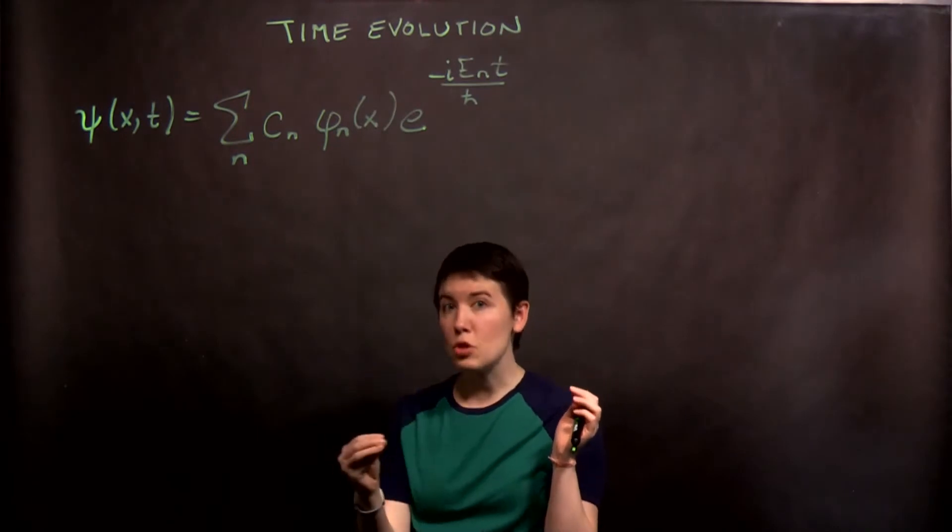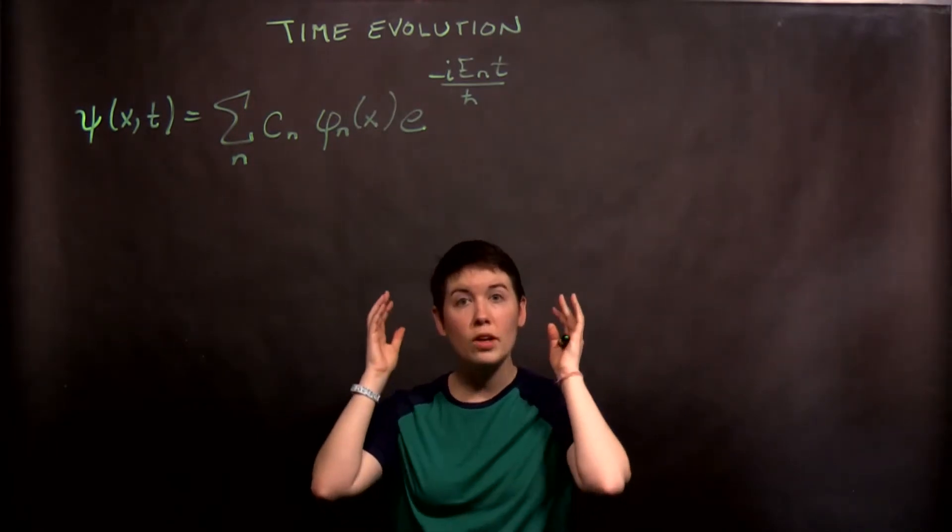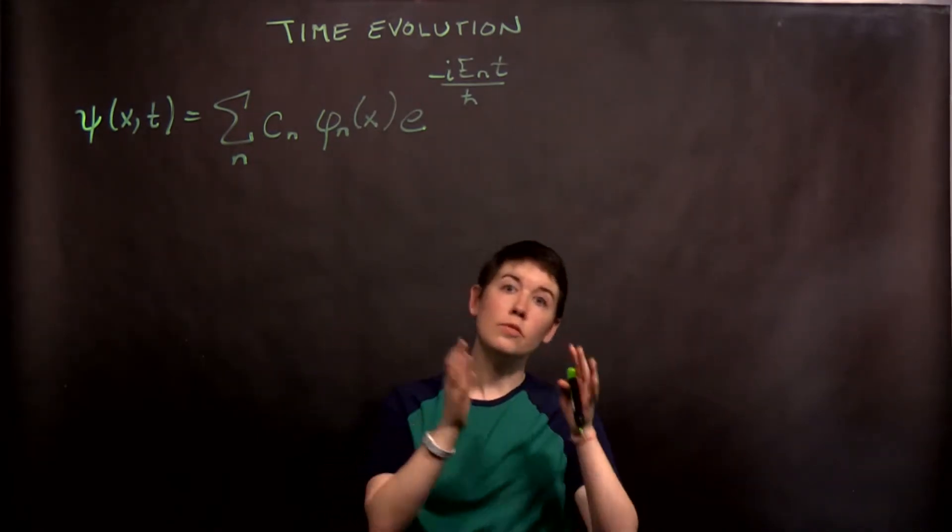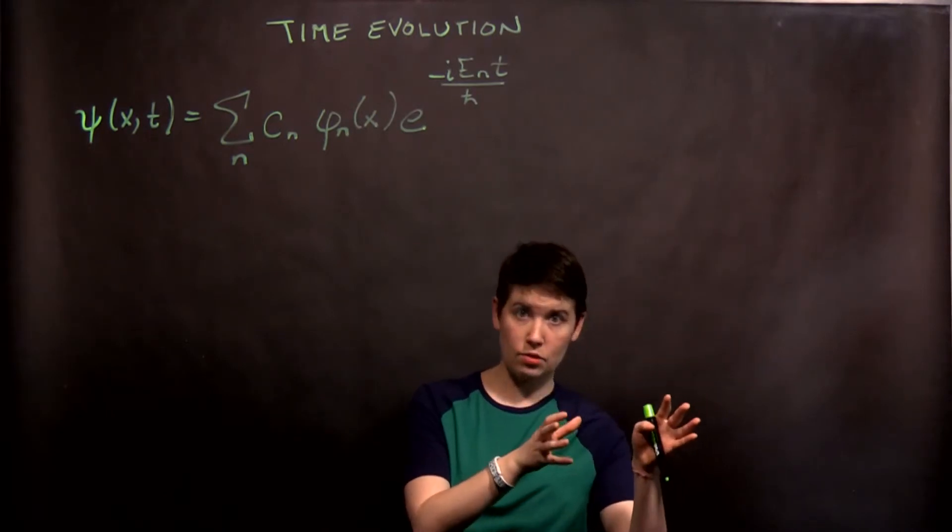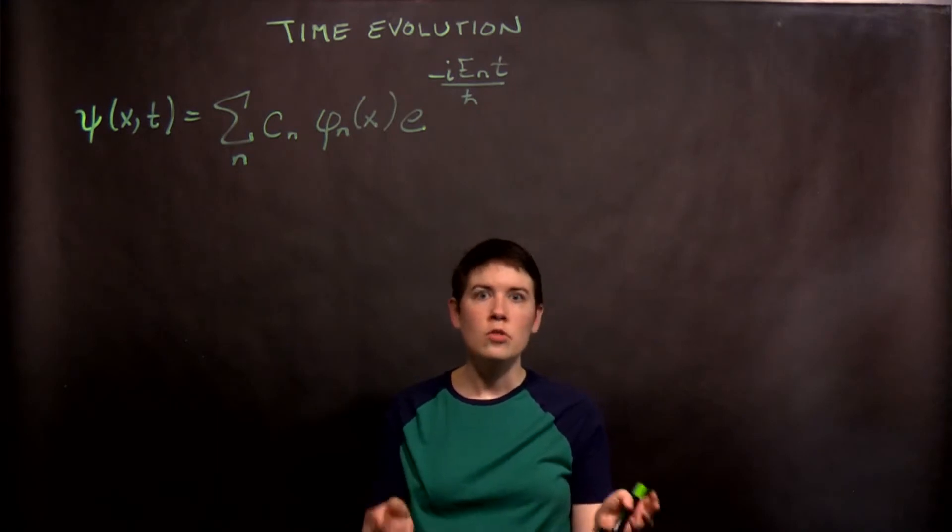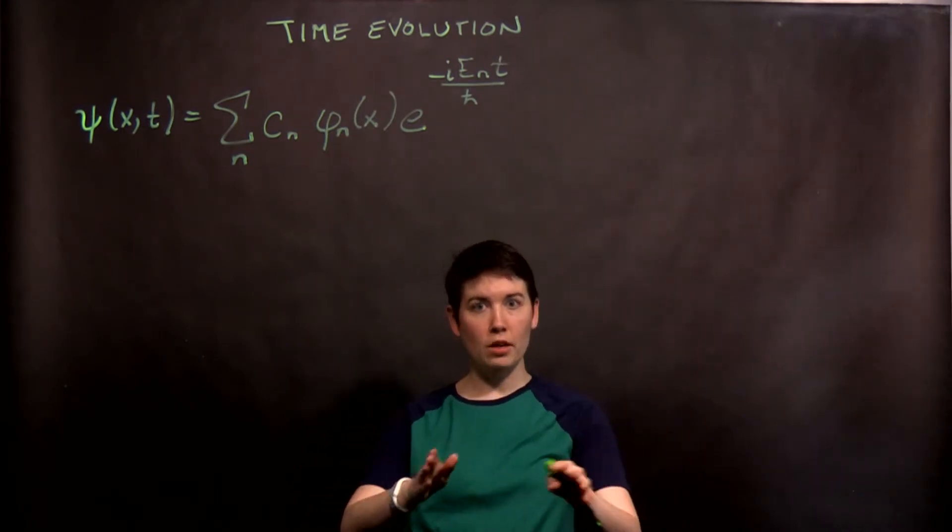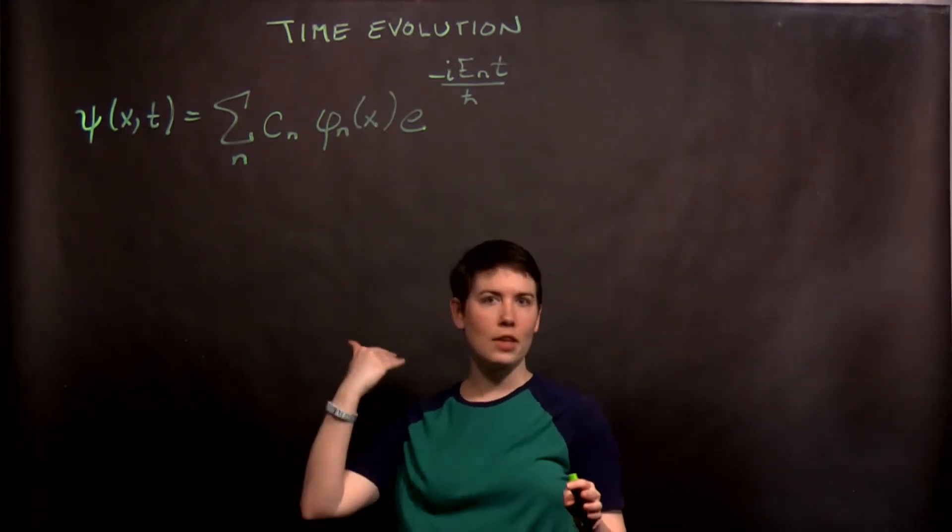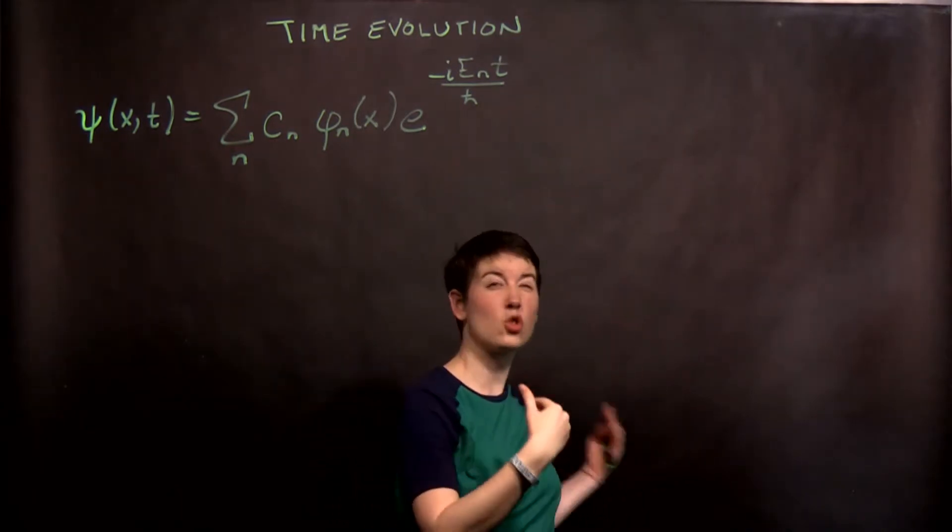But now we're working in the position representation, and so we have to take whatever wave function we have, convert to the energy eigenstates of the position representation, and then introduce the time evolution. So again, there's two ideas that we're bringing from previous videos. One from just the last section, and one from the last chapter.